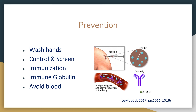Prevention includes hand washing, which is good for any disease. Control and screening are used for hepatitis A, especially for those handling food. Immunizations are available for hepatitis A and hepatitis B, but none for hepatitis C. Immunoglobulin for hepatitis A should be used within one to two weeks after exposure. To prevent hepatitis B and C, avoid sharing razors, toothbrushes, and use condoms.